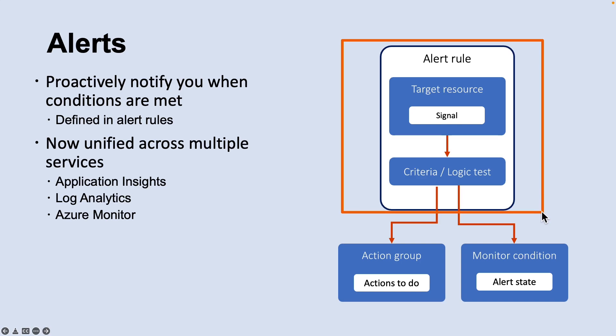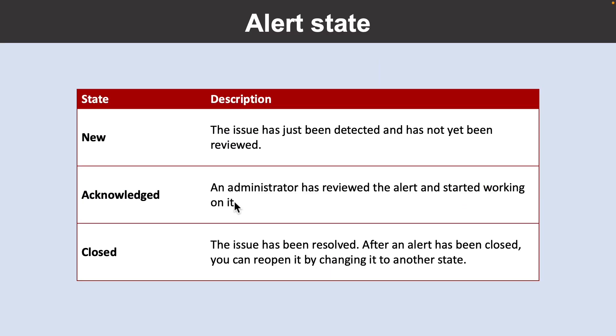An alert rule captures the target and criteria for alerting. The alert rule can be in an enabled or disabled state, and alerts only fire when enabled. You can set the state of the alert to specify where it is in the resolution process. When the criteria specified in the alert rule is met, an alert is created or fired and it has a status of new. You can change the status when you acknowledge an alert and when you close it. All state changes are stored in the history of the alert.